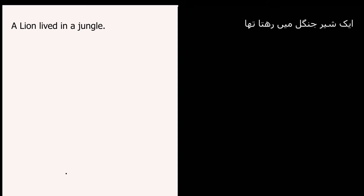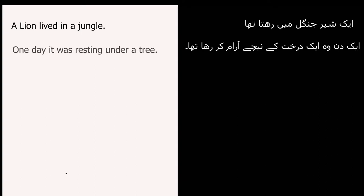Let's start the story. The first sentence is: 'ایک شیر جنگل میں رہتا تھا' — 'رہتا تھا' tells us this is past indefinite, because it shows a routine in a past time. The rule for past indefinite is to use the second form of the verb without any helping verb. So: 'A lion lived in a jungle.' The second sentence is: 'ایک دن وہ درخت کے نیچے آرام کر رہا تھا' — 'کر رہا تھا' means this goes into past continuous. So: 'One day it was resting under a tree.'